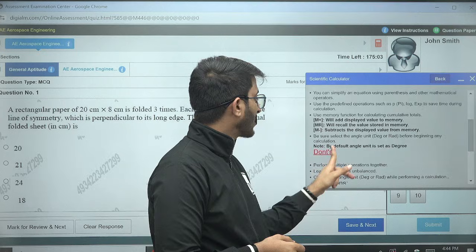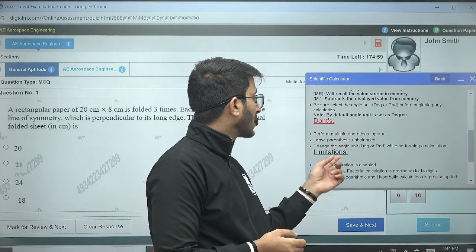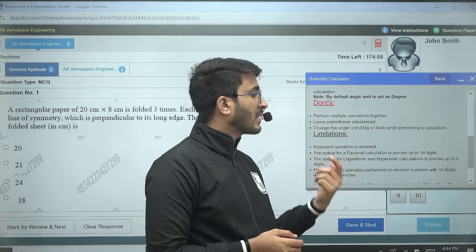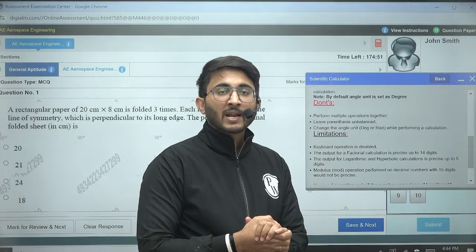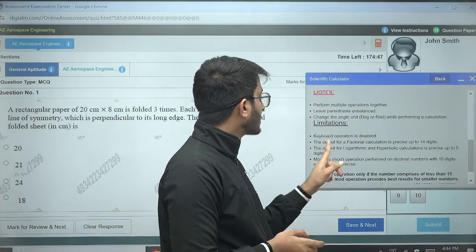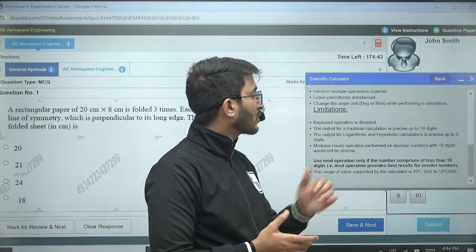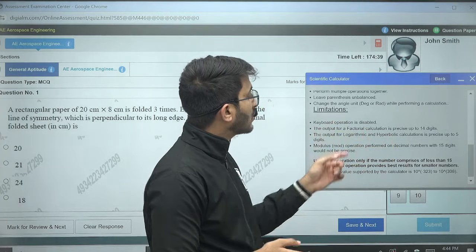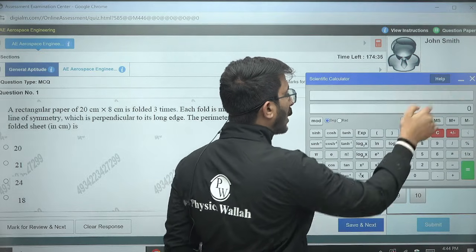And do nots are also there: perform multiple operations together, leave parenthesis unbalanced. Again, if you are using parenthesis in an imbalanced manner, then definitely your calculation answers will come differently. Rest guys, keyboard operations are disabled, and the output of factorial calculation is precise up to 14 digits. So this all you need to follow.